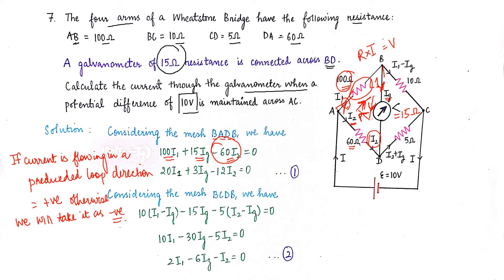We can simplify the whole equation by dividing by 5. That gives a simplified equation which we cannot reduce further, so we label it as equation number 1 and move on to the next loop.